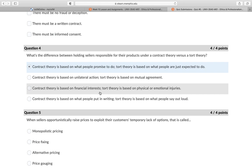The third option says contract theory is based on financial interests, while tort theory is based on physical or emotional injuries. Contract theory is not always based on financial interests. You can enter into a contract that has no financial binding.